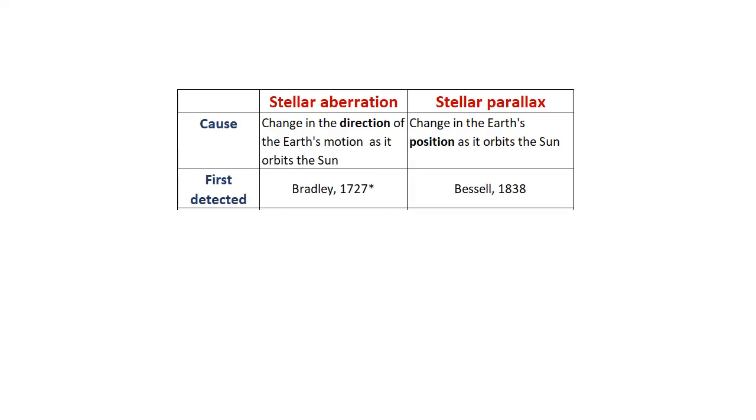Stellar aberration was first detected in 1727, more than 100 years before stellar parallax, and although Bradley was the first person to accurately measure and explain stellar aberration, a small shift in position of stars over a 12-month cycle had been reported by earlier astronomers. In fact, interestingly, the first ever British Astronomer Royal, John Flamsteed. But none of these earlier astronomers had been able to accurately measure the effect, nor provide a satisfactory account for it.